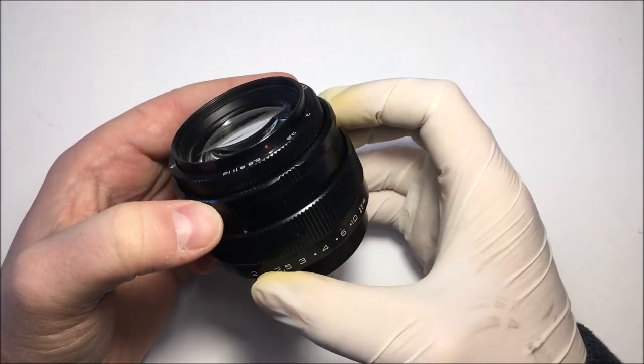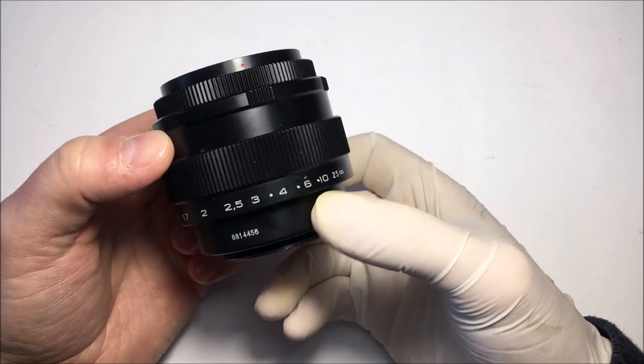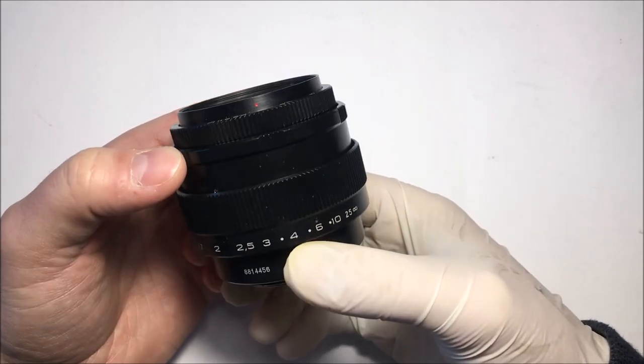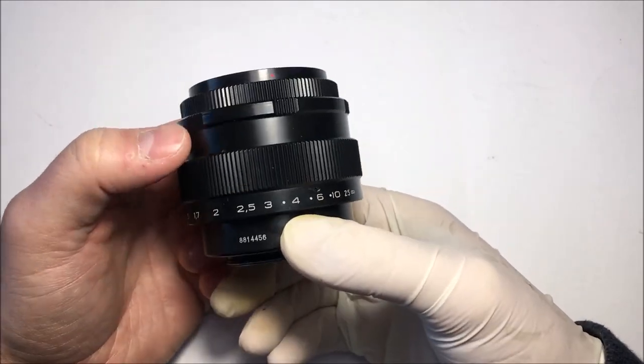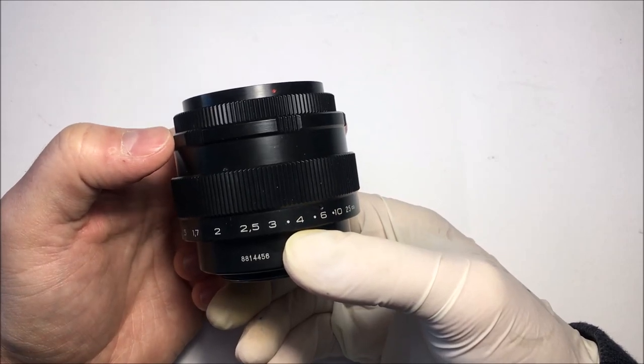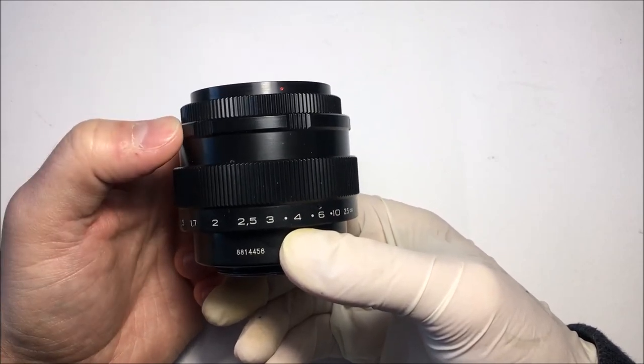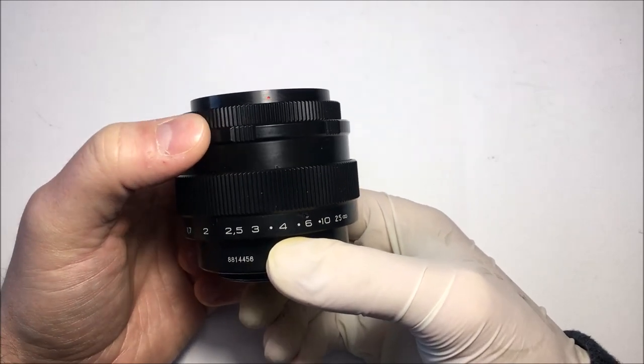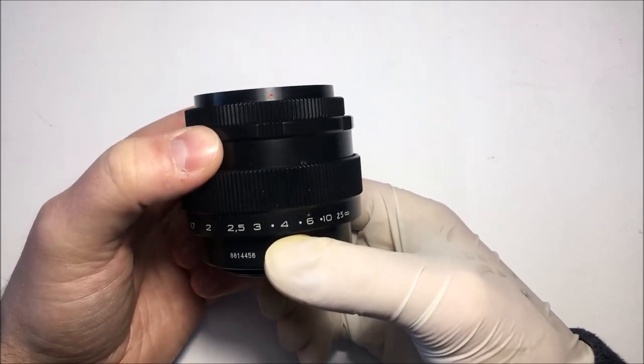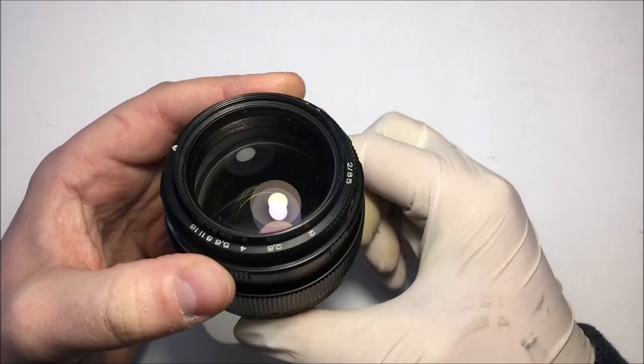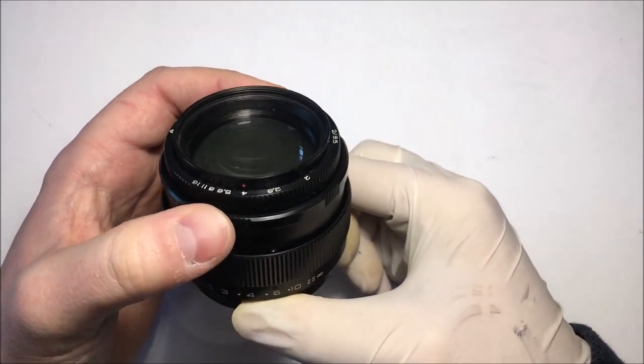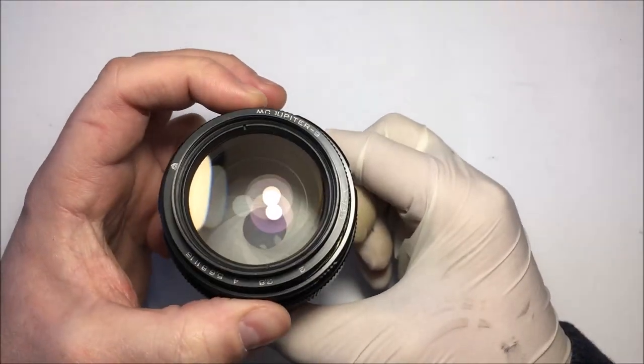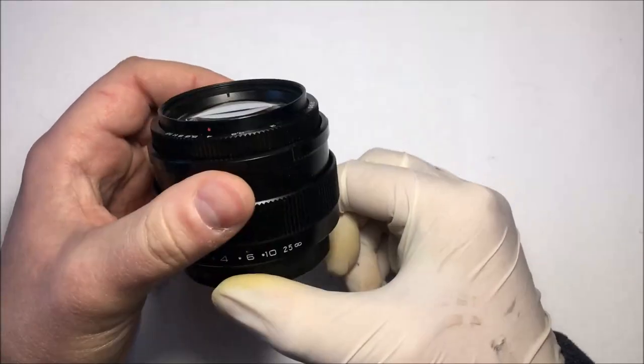And then without even needing to watch on the aperture ring, you just turn this ring counterclockwise like this until it stops. And you know for sure that your lens is stopped to the desired aperture value. In our case it's F at 4. You see, like this, hop, it stops the ring and you know that you will shoot at F at 4.